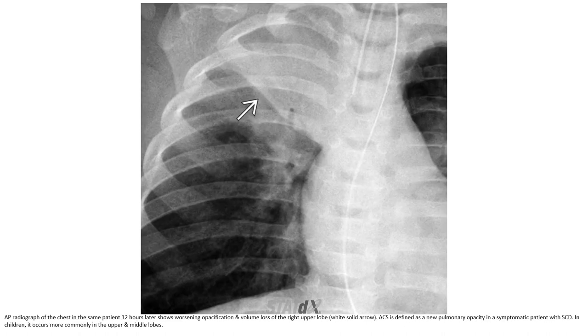If we check the radiograph of the chest in the same patient 12 hours later, there is new subsegmental opacity and volume loss of the right upper lobe.